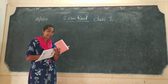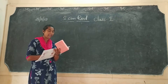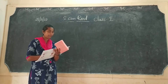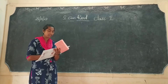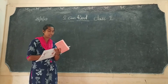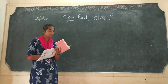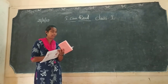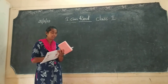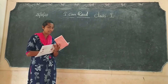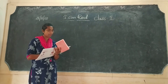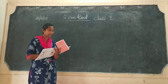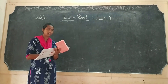There was a cat. The cat was fat. The cat sat on a mat. There was a rat. The rat had a hat. The rat sat on a bat. The bat was on the mat. The cat caught the rat.